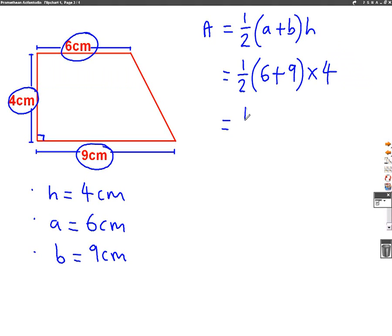So this is half, 6 plus 9 is 15, times 4. And again, if you've got a calculator, you can use a calculator to help you work this out. But half of 15 is 7.5, times 4. 7.5 times 4 is 30. So the answer to this question is 30 centimetres squared.